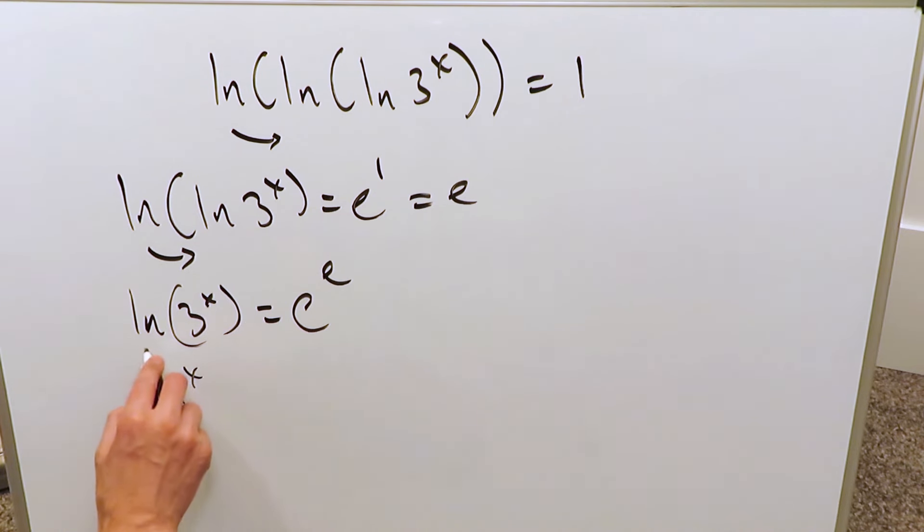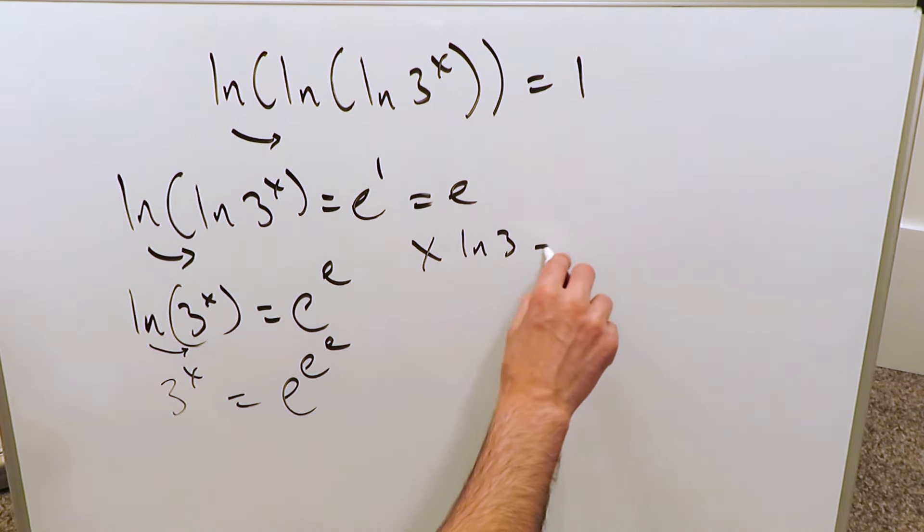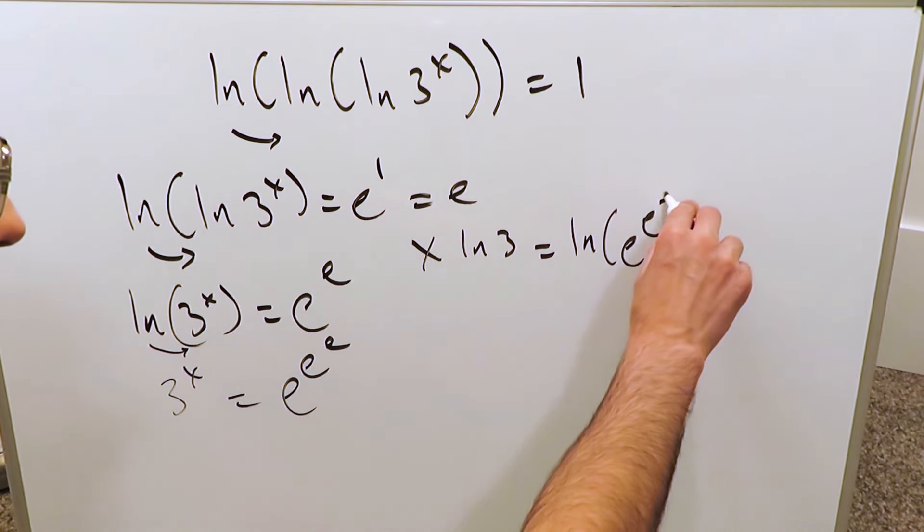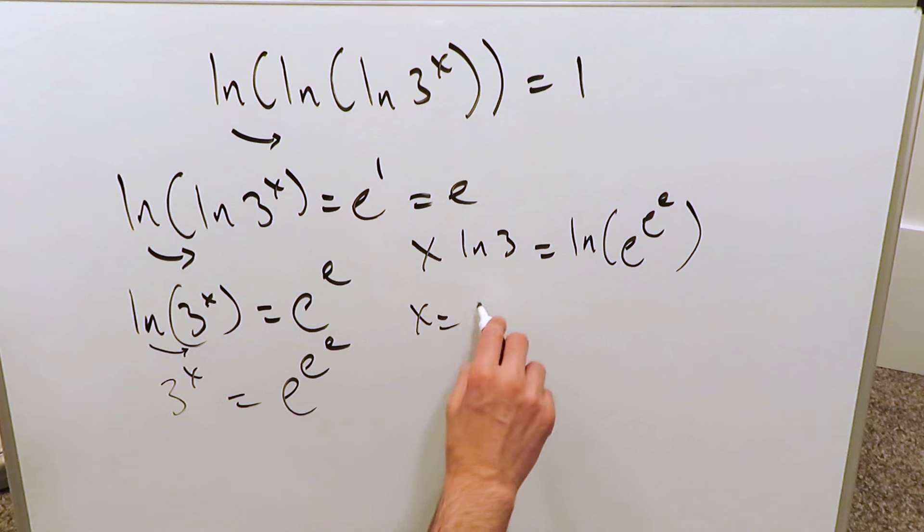3 exponent x, let's push this on the other side, is equal to e exponent e exponent e. Now we solve for this x. Bring in the properties of logs: x natural log 3 is equal to natural log e exponent e exponent e. Push the natural log on the other side, x is equal to natural log of what you see right here divided by natural log 3.